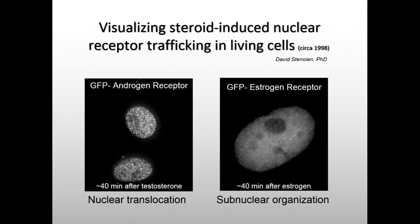A long time ago we could follow a single cell and look at hormone effects. On the left, the nuclear receptor — androgen receptor — goes from the cytoplasm to the nucleus quite quickly. Depending on the cell, it could be a few minutes or it could be an hour or two. On the right, inside the nucleus of an estrogen receptor expressing cell, there's not much trafficking in and out; it's mostly resident in the nucleus, but you can see hormone-induced changes in the nuclear structure.